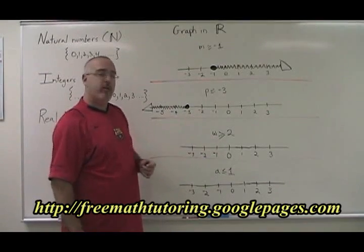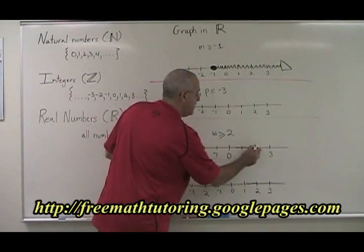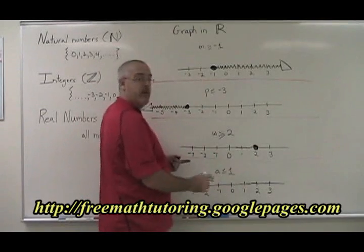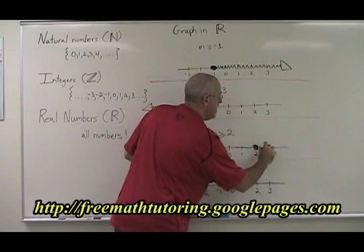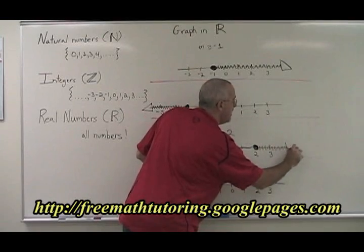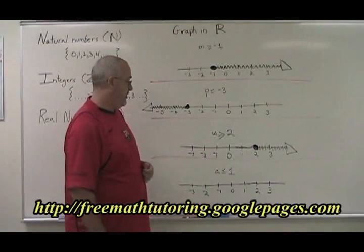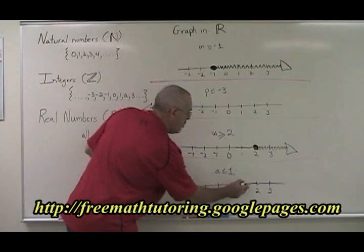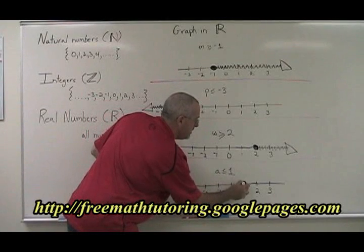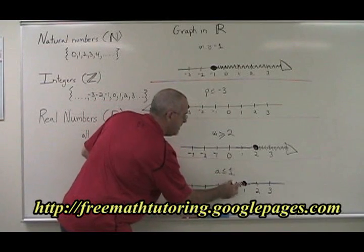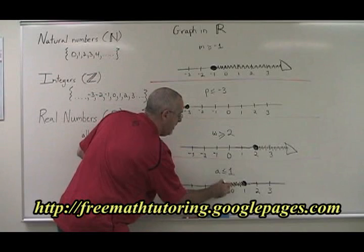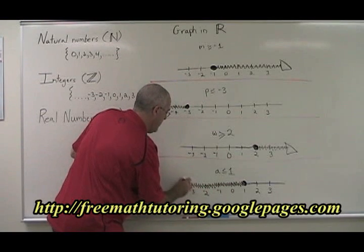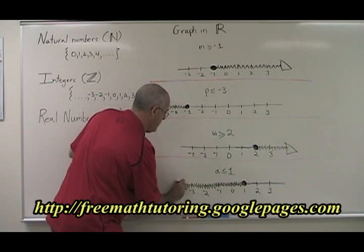W greater than or equal to 2. 2 is equal to 2. All the numbers greater than 2 are that way, so we shade that way, including all of them, and go on forever in the positive direction. A less than or equal to 1. 1 is equal to 1 and is in the answer. All of these numbers are less than 1, so we shade to include all of them and go on forever in the negative direction.